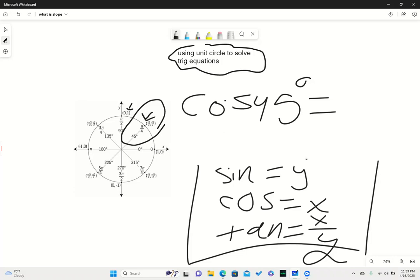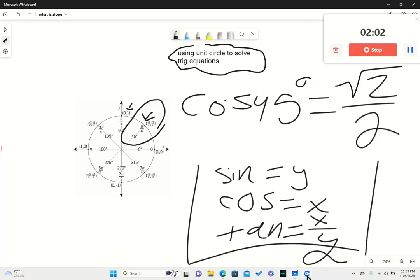Because cosine is equal to x. So in this case, the cosine of 45 degrees would be root 2 over 2. And that is how you use the unit circle to solve your equations. I hope this video helped you.